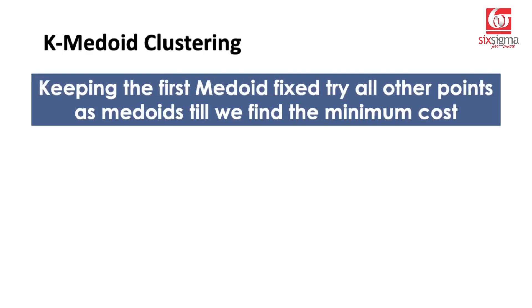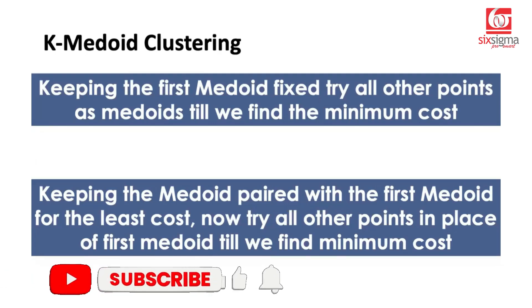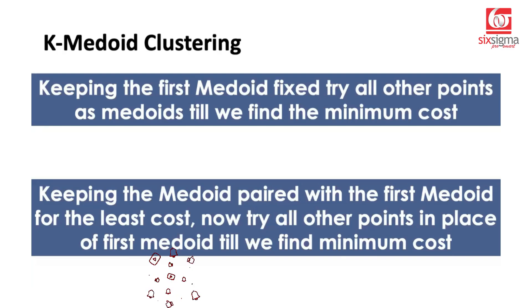Once we find the best second medoid, we keep it fixed and try replacing the first medoid with all other points to find the minimum cost. Because we made random choices to begin with, we don't know if that yields the optimal result. Eventually this algorithm converges. This overcomes the weakness of K-means because it doesn't calculate averages, means, or centroids — but it can be computationally expensive because it repeatedly compares distances between all points.